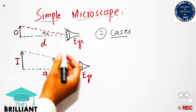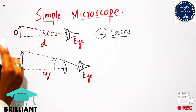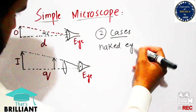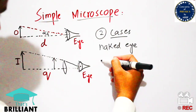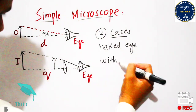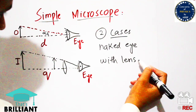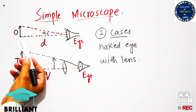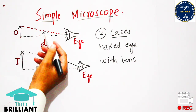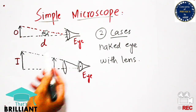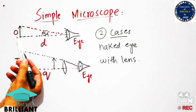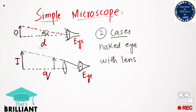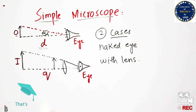The first case is also known as the naked eye case, in which the object is placed directly in front of the eye with no lens. The angle produced when the object is placed in front of the eye is known as alpha, the distance between the object and eye is D, and the size of the object is O.